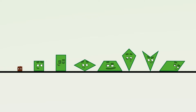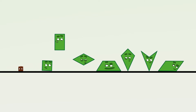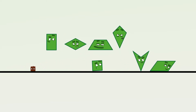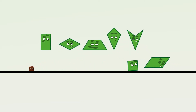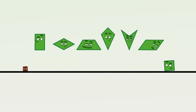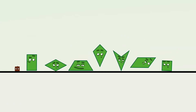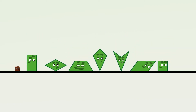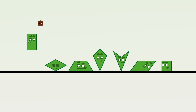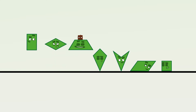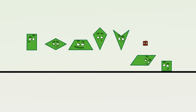Hello! Four-sided shapes, introduce yourselves. Rectangle. Rhombus. Trapezium. Kite. Dart. Parallelogram. Square. Ooh, what wonderful names. And what wonderful shapes. Rectangle. Rhombus. Trapezium. Kite. Dart. Parallelogram. Square.